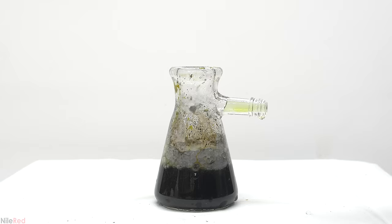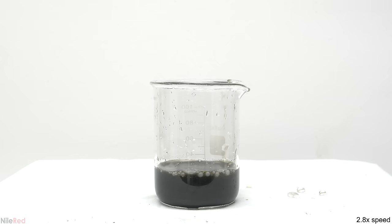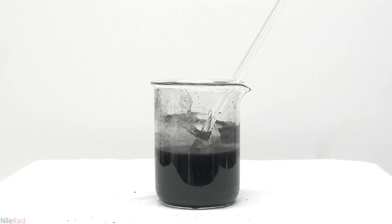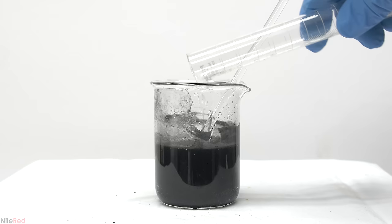I was afraid that the flask might overflow so I transferred the contents to a beaker. I then continue to add the hydrochloric acid in small portions until no bubbling occurs. Here I added a few milliliters and I notice that nothing happened so I move on to testing the pH.